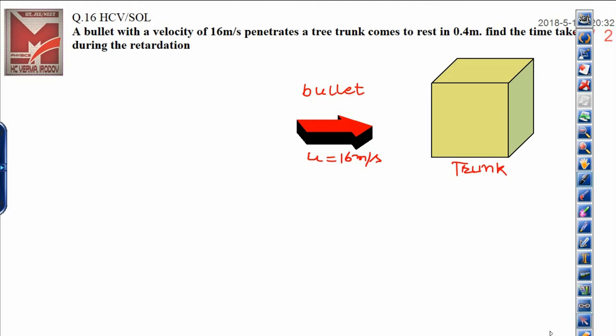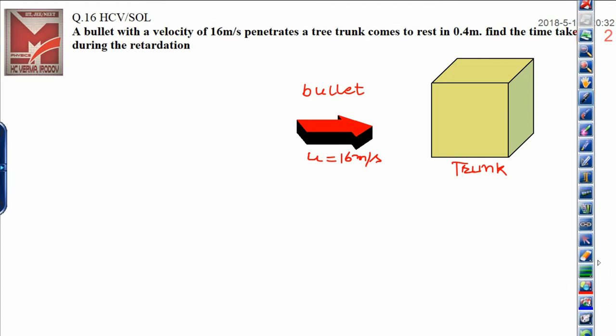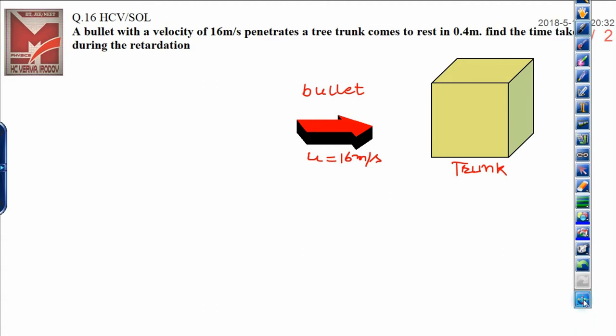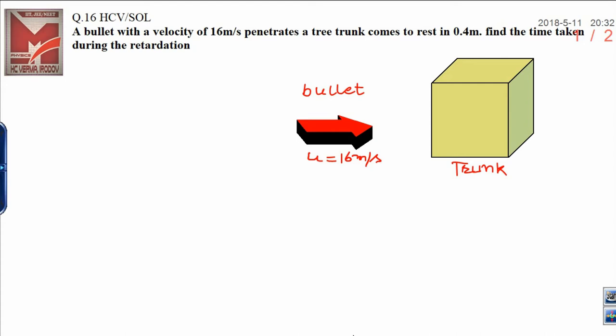Now, this is a tree trunk, let me choose the color first. This is a tree trunk and bullet will enter into it and finally, it gets retarded. Let this is the position where it will get rest, it means final velocity becomes 0 when it gets penetrated and this distance is given that is 0.4 meter, after that it becomes in the state of rest.